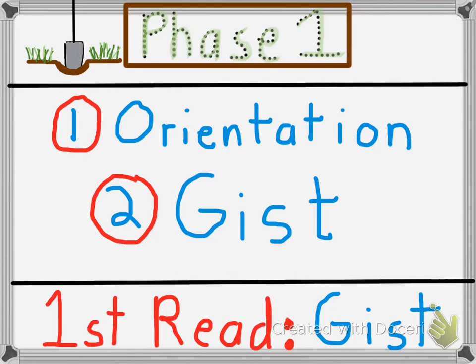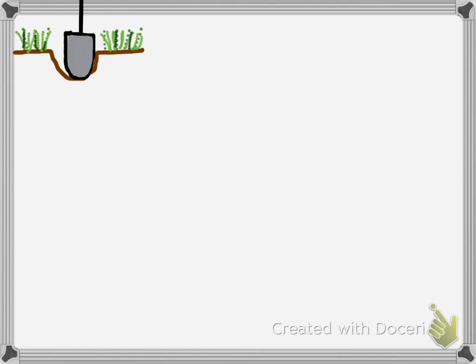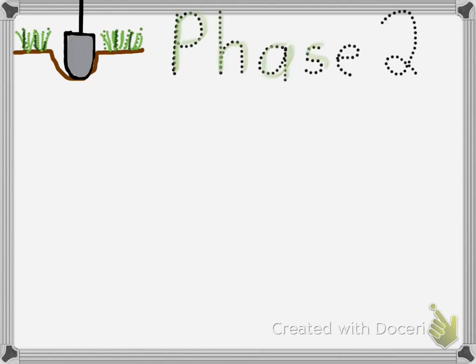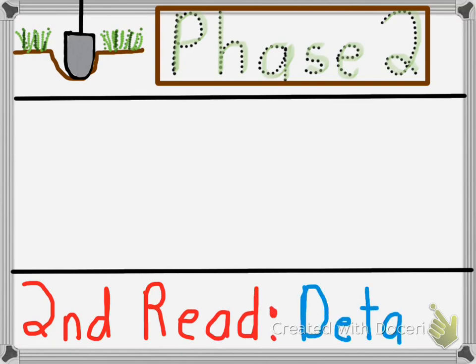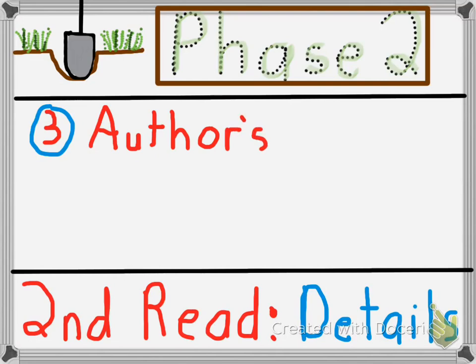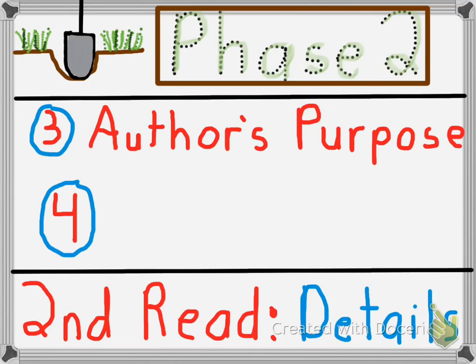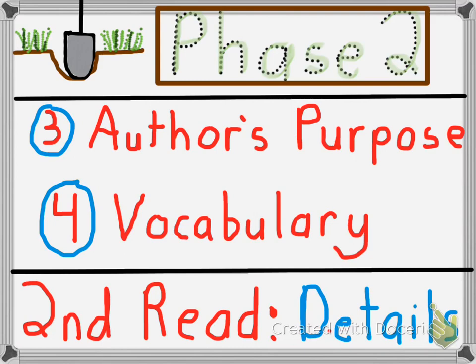After our first read of the text, we will continue to phase two. In phase two, we will dig a little deeper into the text in our second read, focused on the details. There are two steps in phase two, which make up our third and fourth steps of close reading. The third step is going to be examining the author's purpose — looking at key details, we can decide if the author is trying to persuade us, inform us, or entertain us. We are also going to use the second read to look for key vocabulary words that are confusing to us.